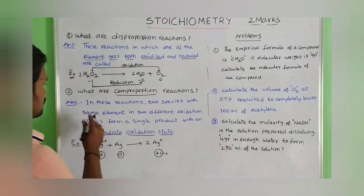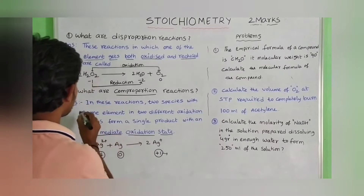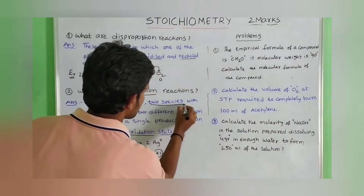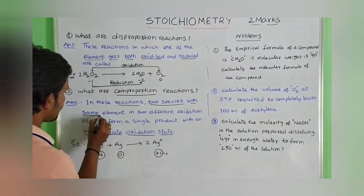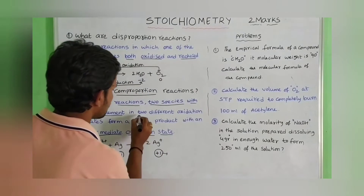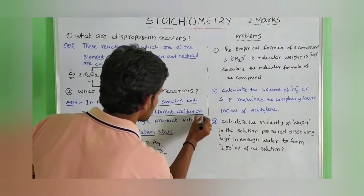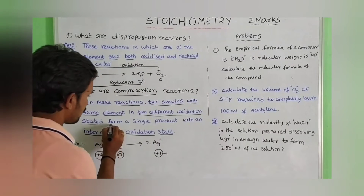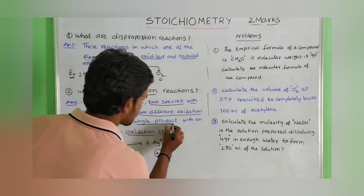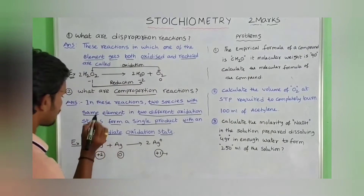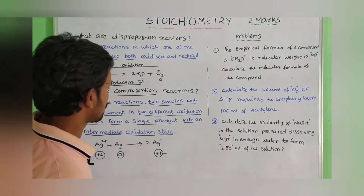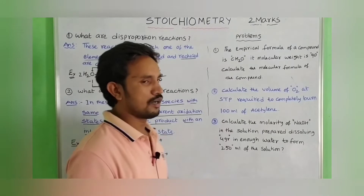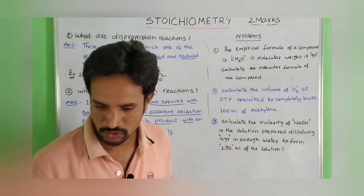See the statement: in these reactions, two species with the same element in two different oxidation states form a single product with intermediate oxidation state. This is known as a comproportional reaction.